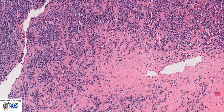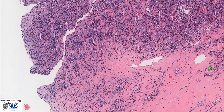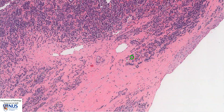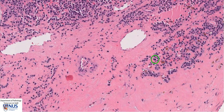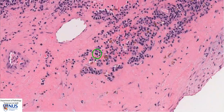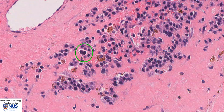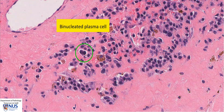In other instances, we can have more plasmablastic appearances where the NC ratios are higher. We don't really see a perinuclear hof and we can see more prominent nucleoli. Over here, we can see a feature that suggests a neoplastic population of plasma cells, and this is binucleation.